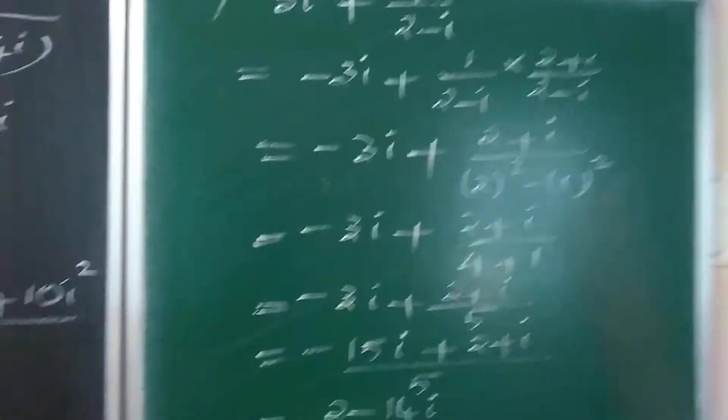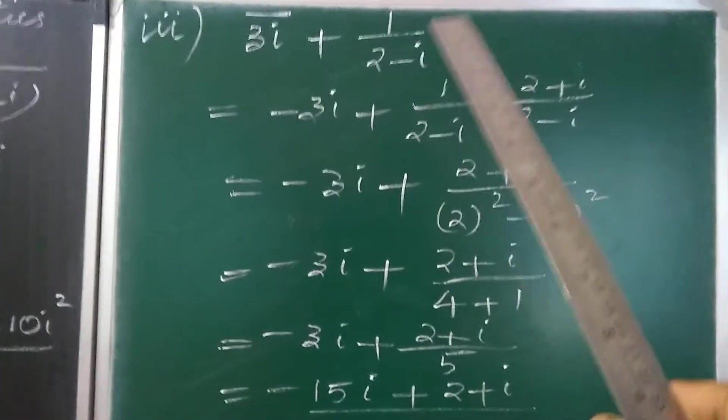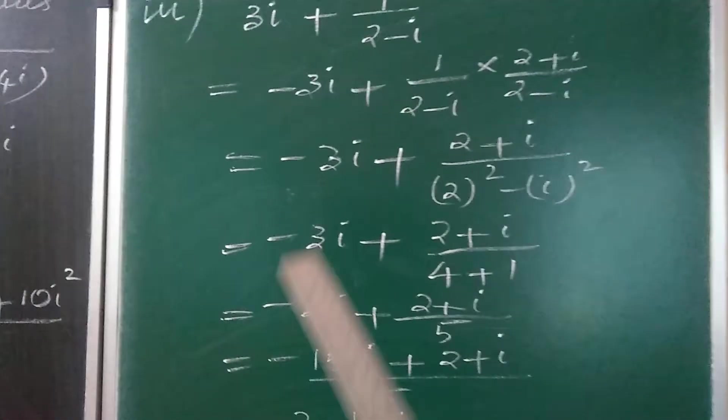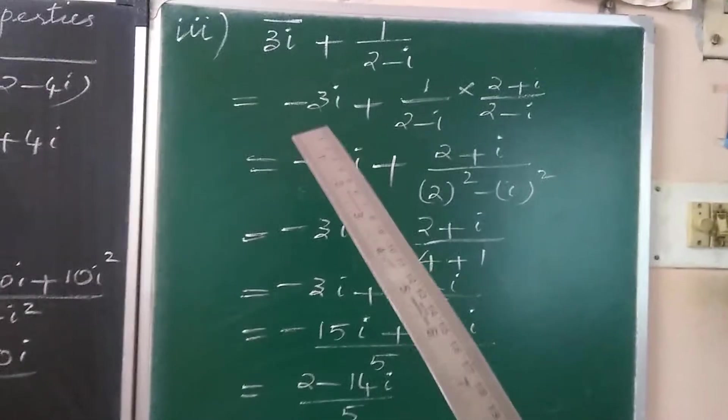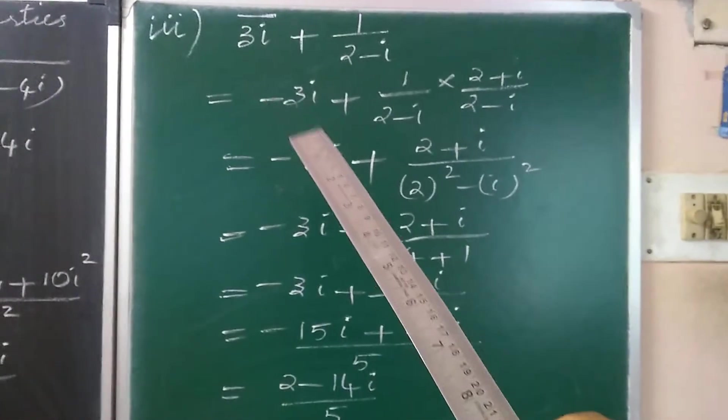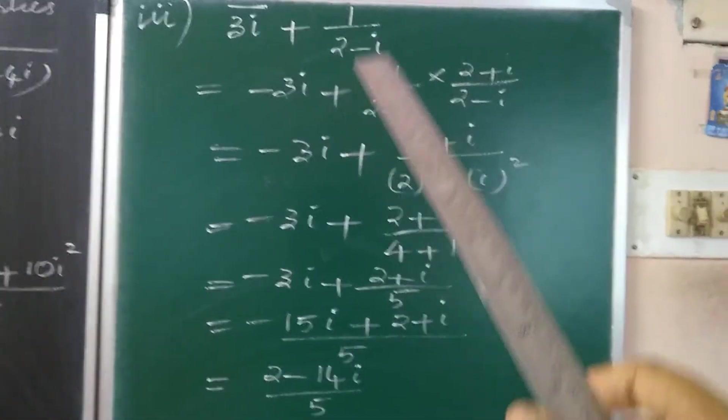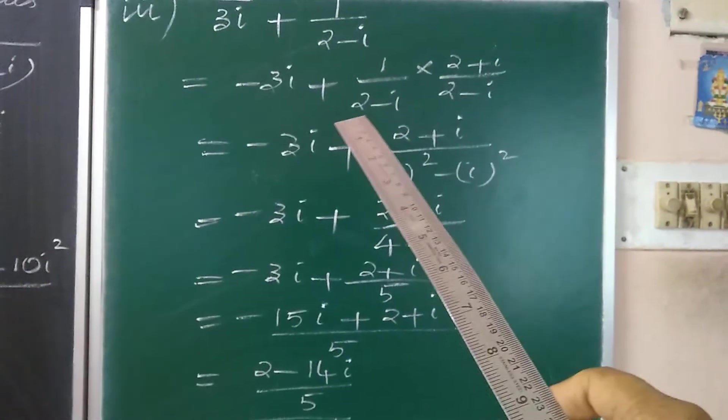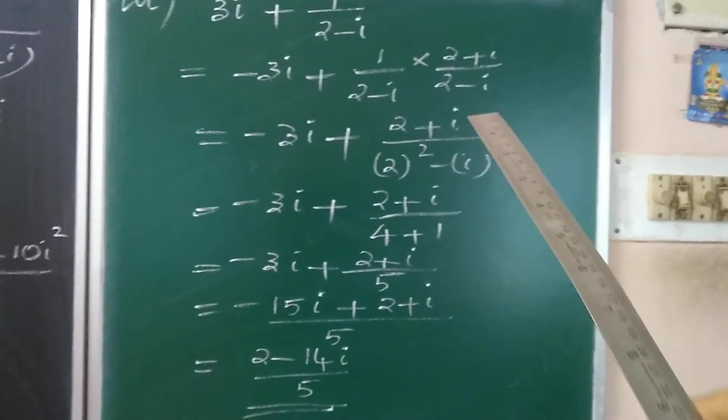The third one is 3i conjugate plus 1 by 2 minus i. Here what we do is we take the conjugate for 3i that is minus 3i plus 1 by 2 minus i should be multiplied and divided by the conjugate of the denominator that is 2 plus i.